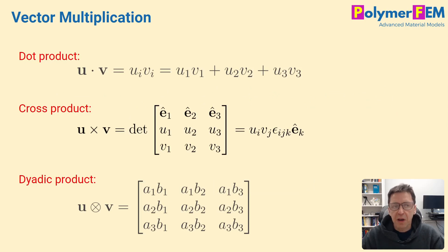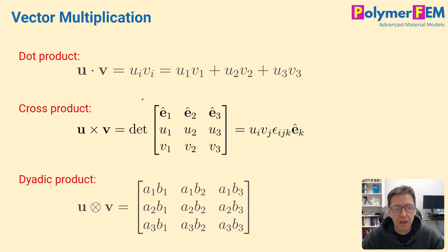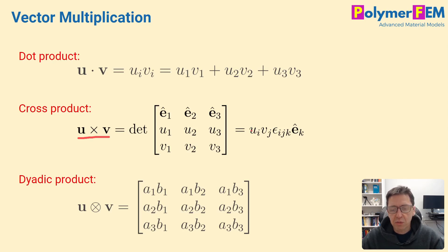Vectors can be multiplied in many different ways. The first is the dot product: you take one vector and dot-multiply it with another to get a scalar — the sum of the individual components. There's also the cross product, which produces another vector orthogonal to the two input vectors, derived from the determinant of a matrix. In shorter form, this can be written using the permutation tensor.